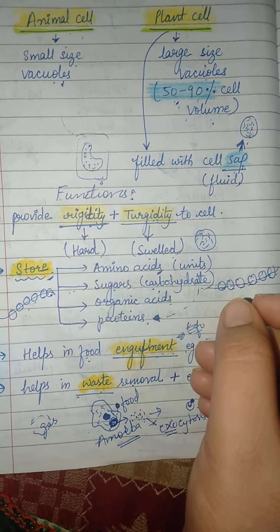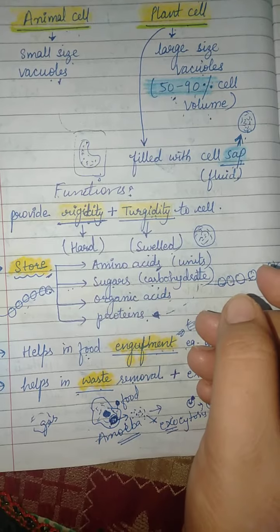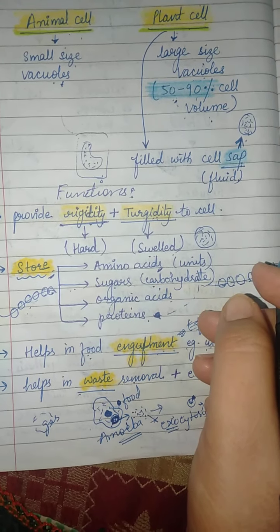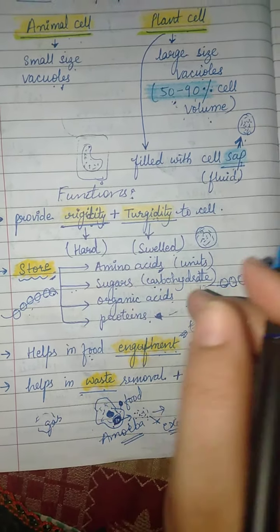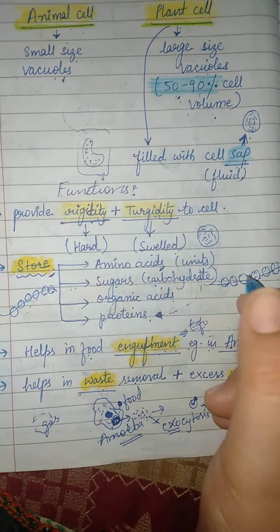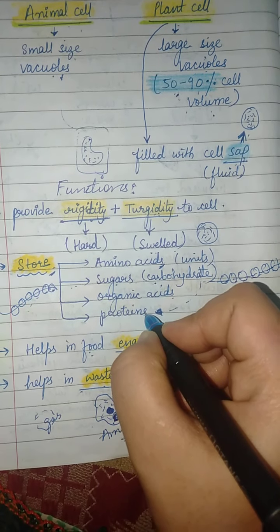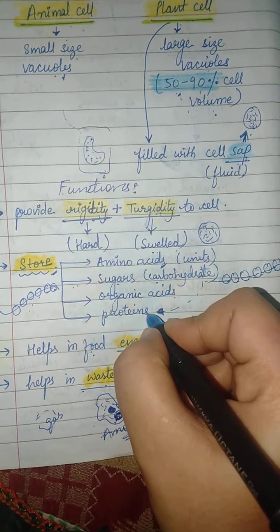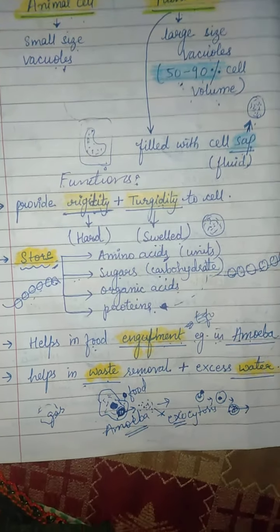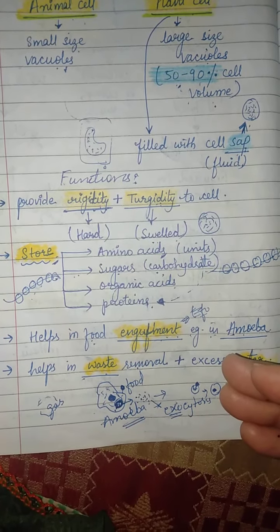Vacuoles also store organic acids such as carboxylic acids and butyric acids. Additionally, they are responsible for the storage of proteins. So amino acids, sugars, organic acids, and proteins are all stored in vacuoles.